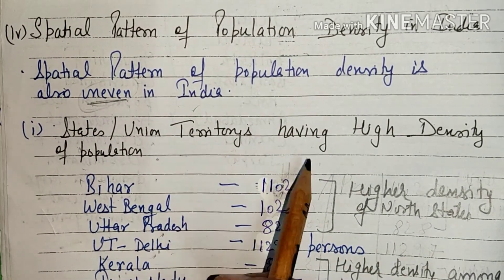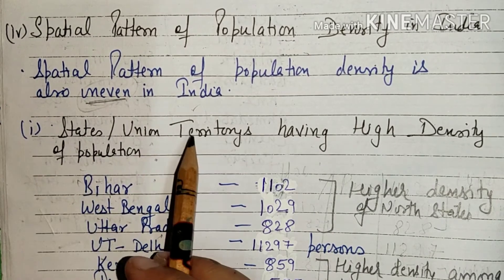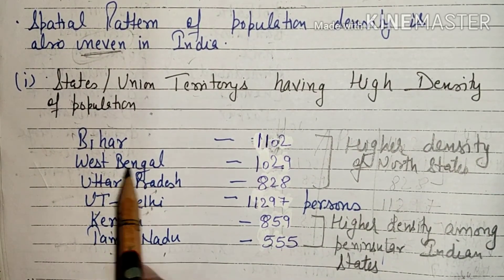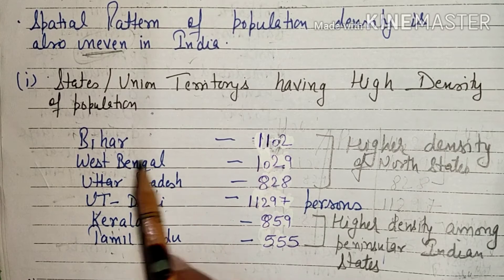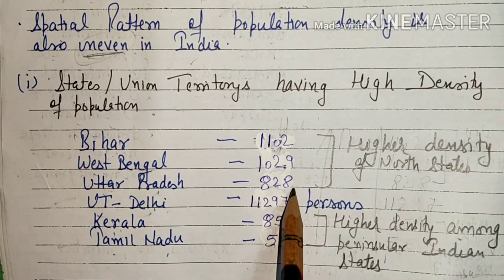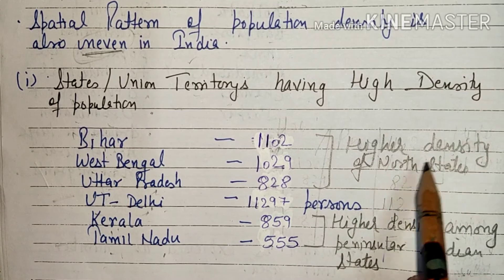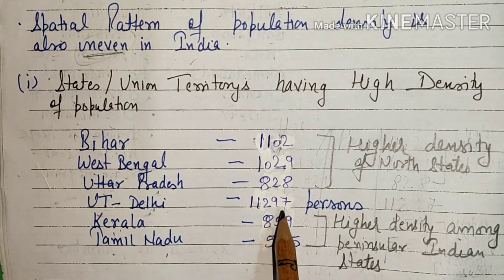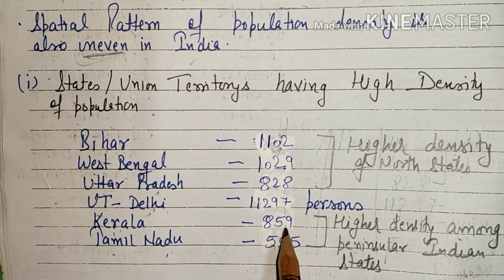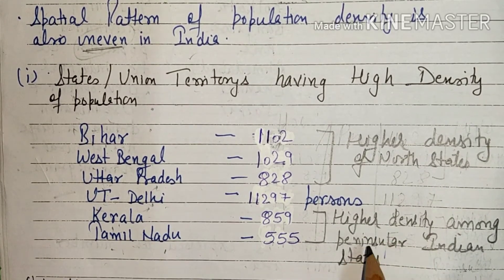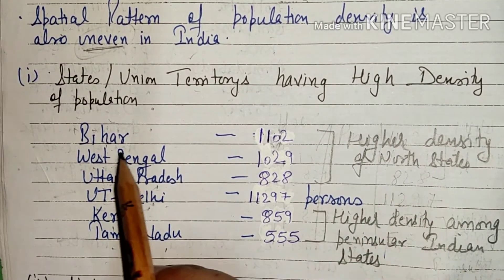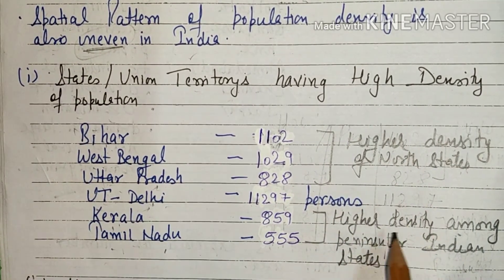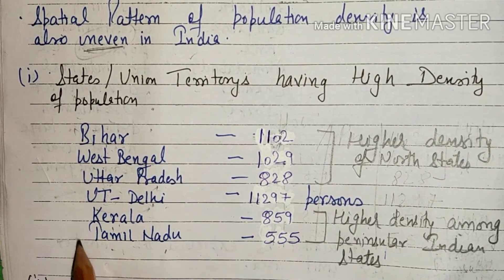States and territories having high density of population: Bihar, West Bengal, and Uttar Pradesh — 828 persons per km² — are the high density North Indian states. Union Territory of Delhi is the highest at 11,297 persons per km². Kerala and Tamil Nadu at 859 and 555 respectively are the higher density Peninsular Indian states. Clear?